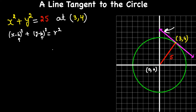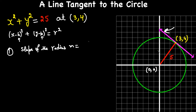We have two points on the radius: (3, 4) and (0, 0). In the first step, I'm going to write the slope of the radius. The slope M is rise over run, or (y₂ - y₁) / (x₂ - x₁). In our case, that's (4 - 0) / (3 - 0), which gives a slope of 4/3.